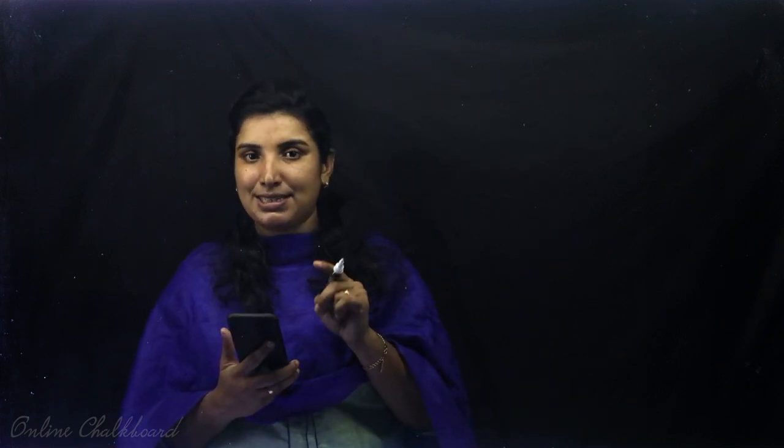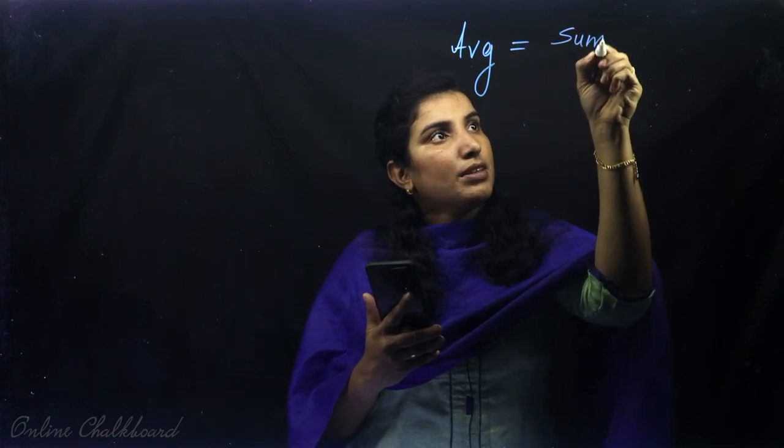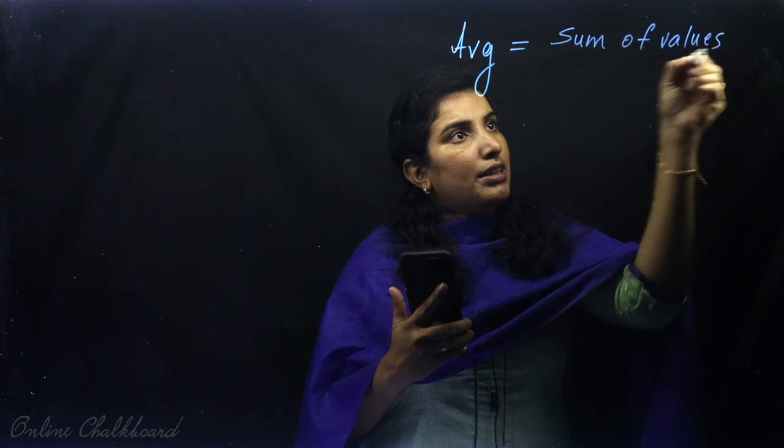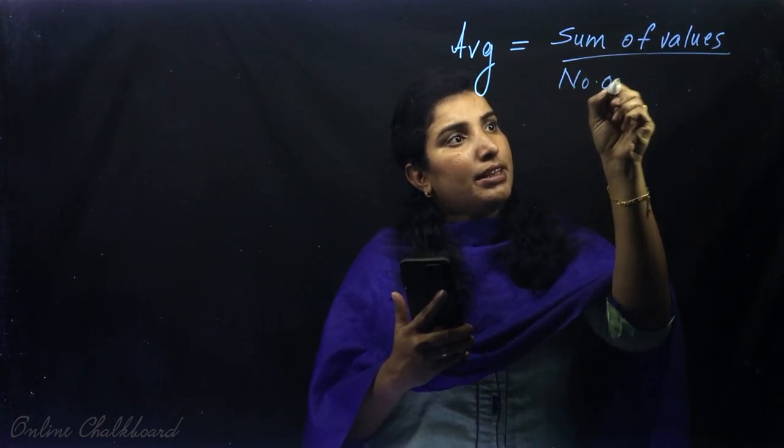We should take a certain portion from a total and a number — that would be the average. There are 3 categories: a total, sum of values, and number of values. The formula is: average is equal to sum of values divided by number of values. This is how we learn it.